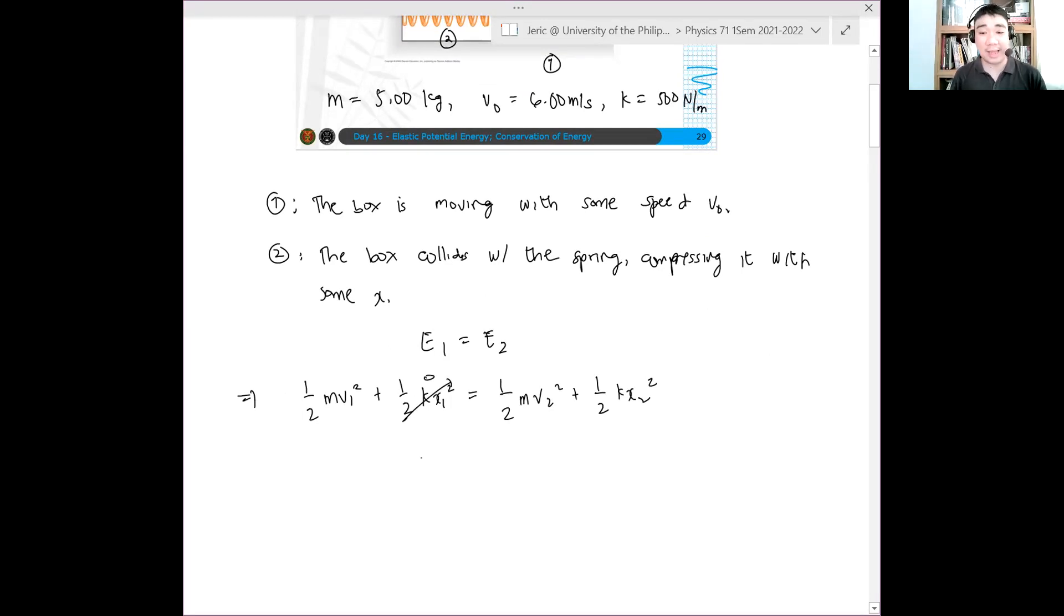But what can we say about the final kinetic energy of the box? Zero. Yes, it is also zero. Why? Because at the maximum compression, the box is at rest. Thus, we just have, hence, we just have a single equation here. One-half mv1 squared equals one-half kx2 squared.